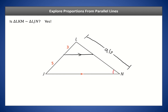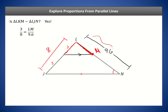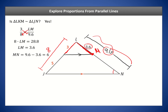Now that we know they're similar, we want to figure out LN. First, let's find LM. We know that the side of length 3 in the small triangle corresponds to the entire side of length 8 in the big triangle. So 3 is to 8 as LM is to 9.6. Cross-multiplying and dividing by 8 gives us LM equals 3.6. Then MN is simply the difference: 9.6 minus 3.6, which gives us 6.